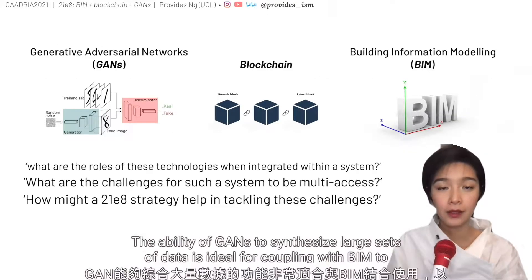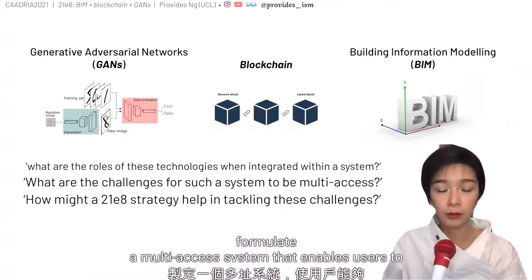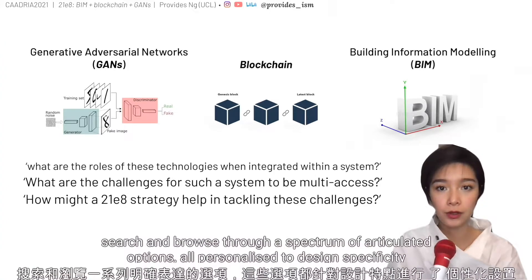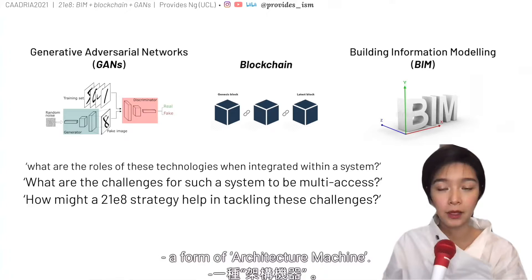The ability of GANs to synthesize large sets of data is ideal for coupling with BIM to formulate a multi-access system that enables users to search and browse through a spectrum of articulated options, all personalized to design specificity — a form of architecture machine.